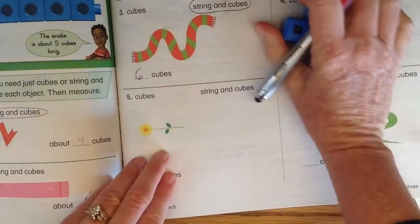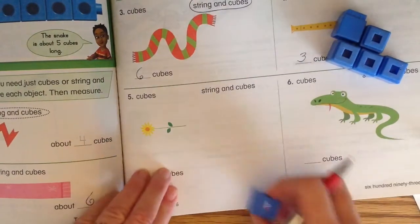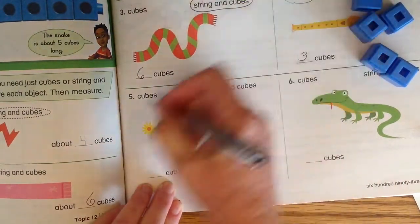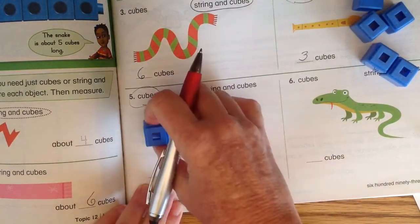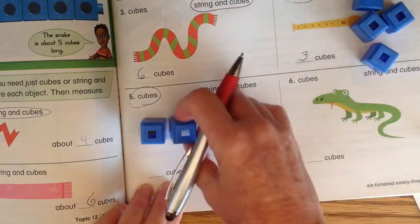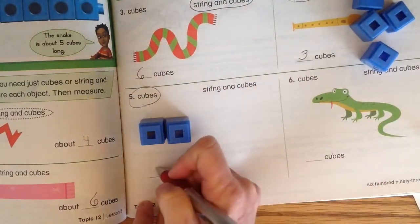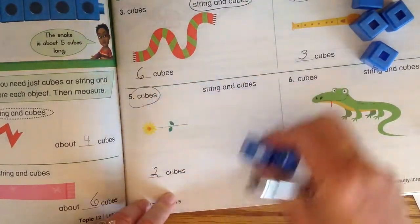How about the flower? It's already straight so we can just do the cubes. I forgot to circle the cubes. There we go. Right on the end. One, two. So that flower is two cubes long.